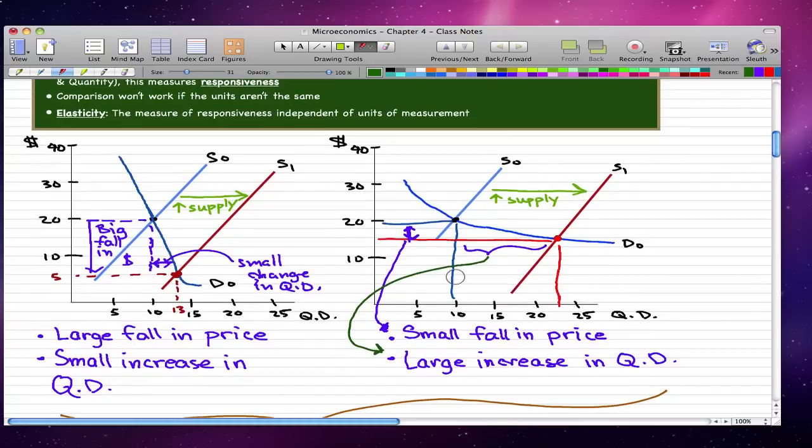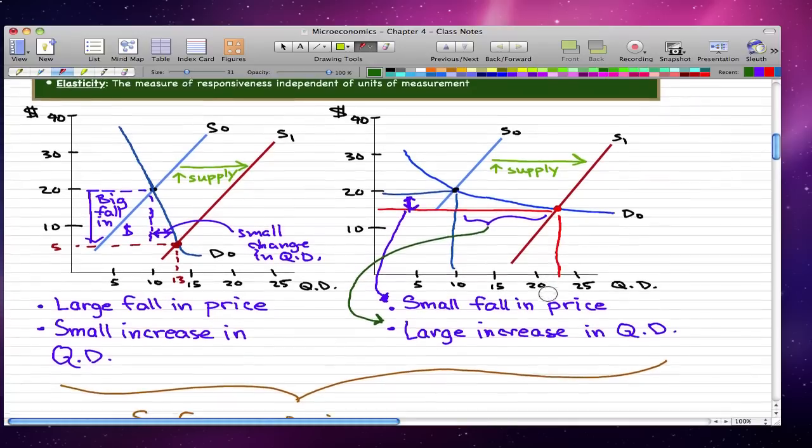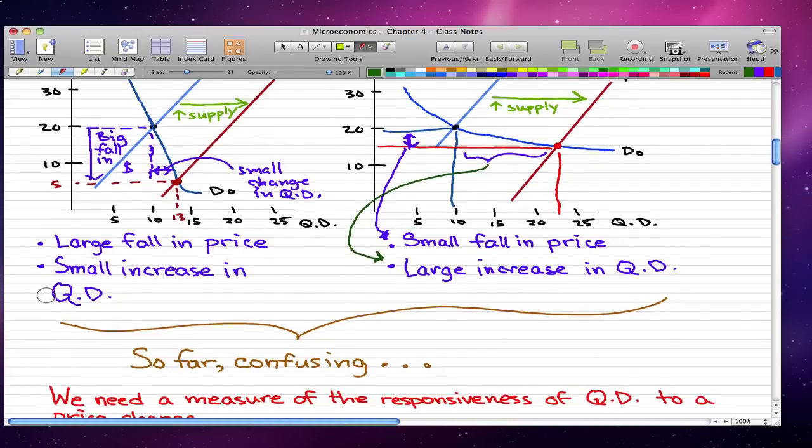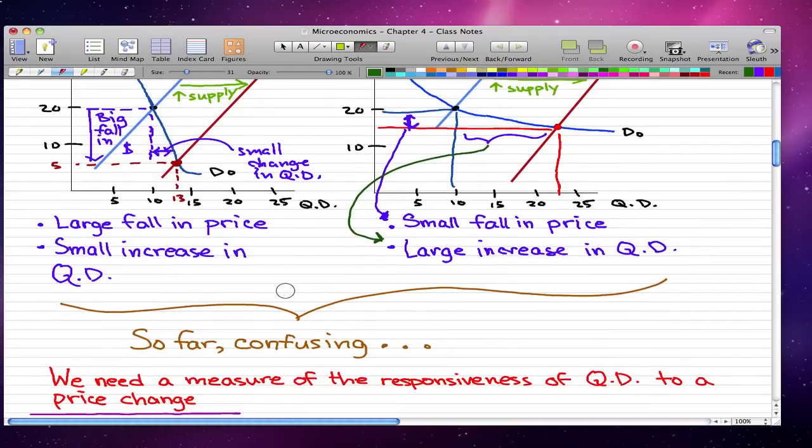Again, this might be a little bit confusing, but what we really need is a measure of the responsiveness of quantity demanded to a price change. We need to somehow find a measurement that gives us how the quantity demanded responds to a change in price.